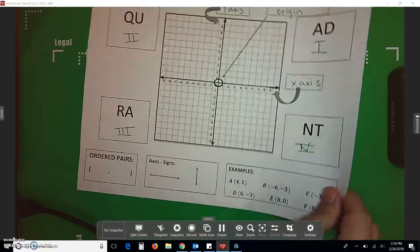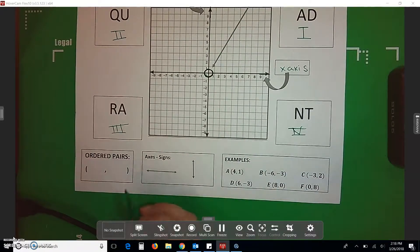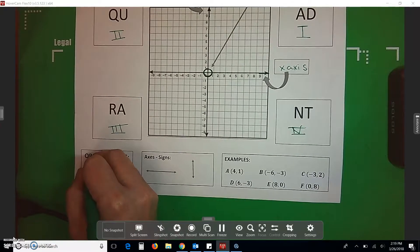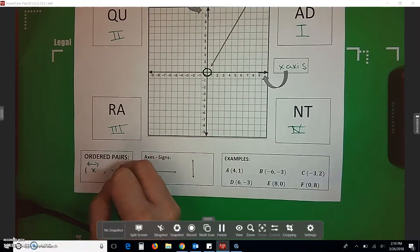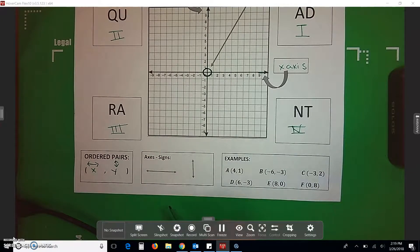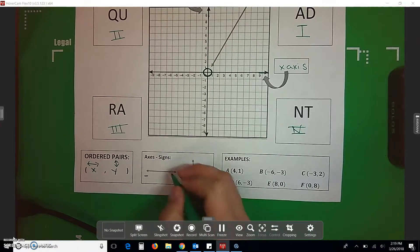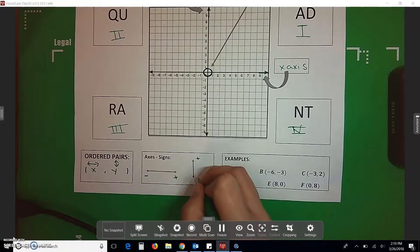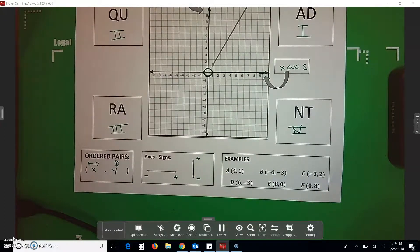Then, if we're looking down here for ordered pairs, x always goes first, and that's our left to right. Y always goes second. That's our up to down. This side's always negative. This side's positive. This side's positive. This side's negative.